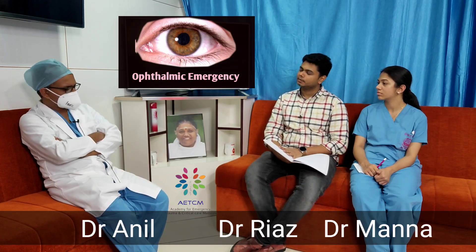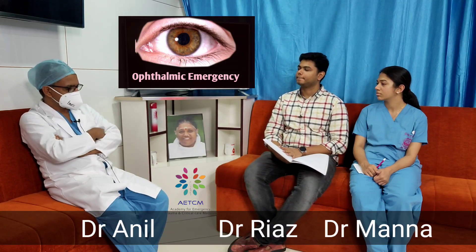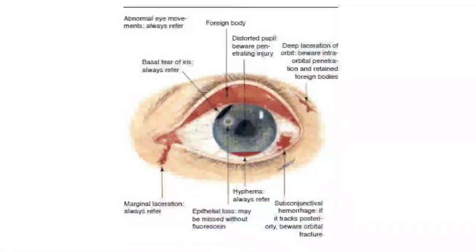When you have a closed globe injury, it is very important to ensure there is no globe rupture. When there is impact on the cornea, there can be a rupture around the limbus, at the insertion of the recti muscles, or very rarely around the optic nerve insertion. You cannot presume there is no globe rupture. That is why we do a B-scan to see whether the globe integrity is maintained. If it is maintained, things are much easier to manage.